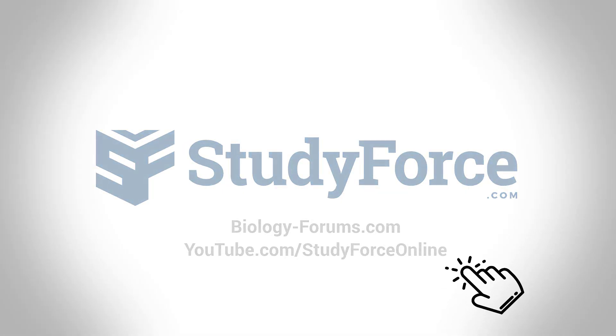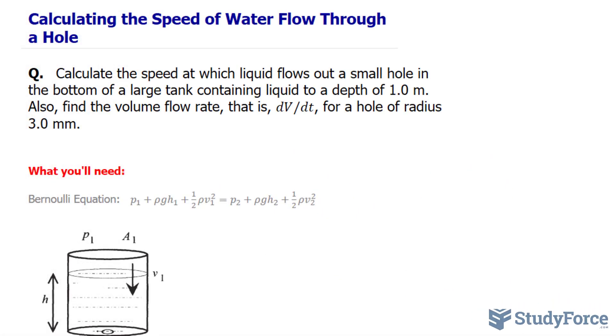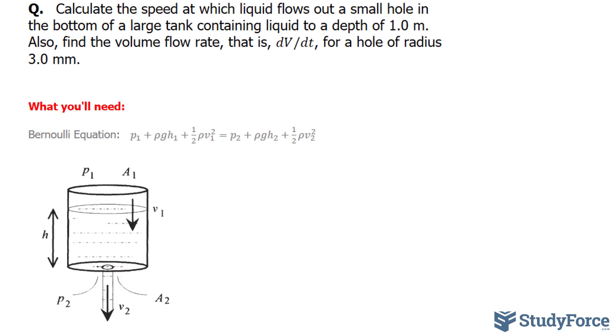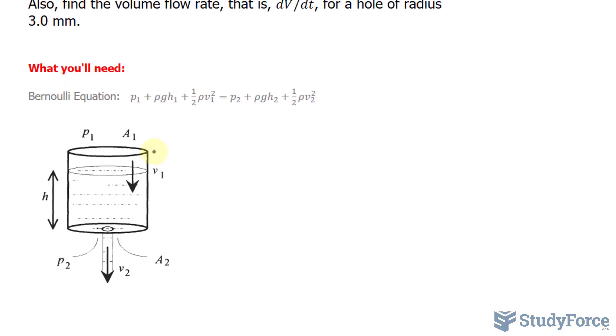In this lesson, I'll show you how to calculate the speed of water as it leaks out of a tank. So as you can see right here, we have a bucket with a leak at the bottom, and what we're looking for is the speed at which that water is coming out, and as a second part to this question, the amount of volume per unit time.